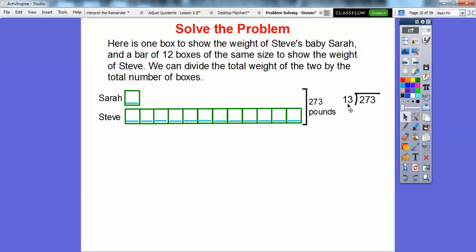Here's one box and then plus 12 is 13. So we're going to divide 13 into 273. Well, 260 is 26 which is 13 times 2. So 260 divided by 13 is 20. That tells us it's going to be in the tens place when we start dividing. Let's estimate 2 times.